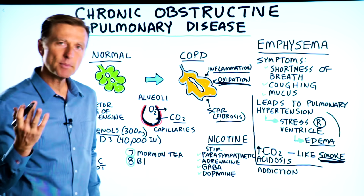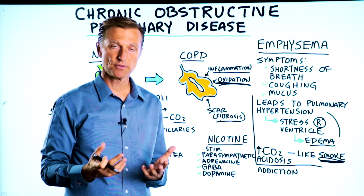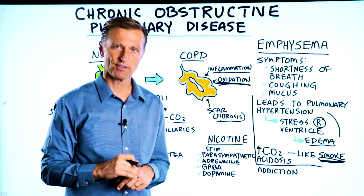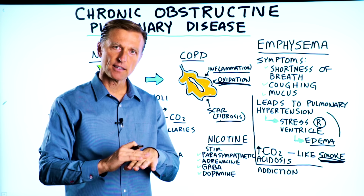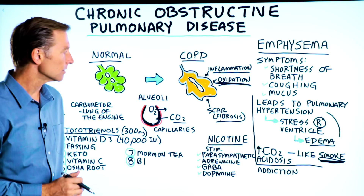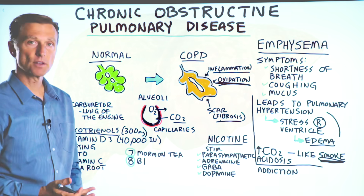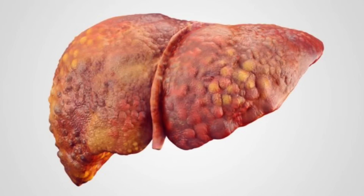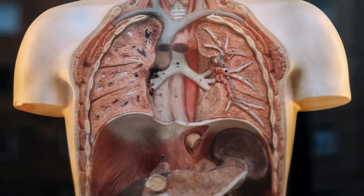So the goal with tocotrienols is to stop the oxidation and inflammation so it doesn't turn into fibrosis. If you think about vitamin E in general, what do people use it for? They use it for scarring — reducing scar on the skin. Well, why not just take it internally to reduce scarring too? Not just in your lungs but also in the liver. There's some great data on cirrhosis, but you can also use it on COPD to help break down some of the scarring in the lungs.